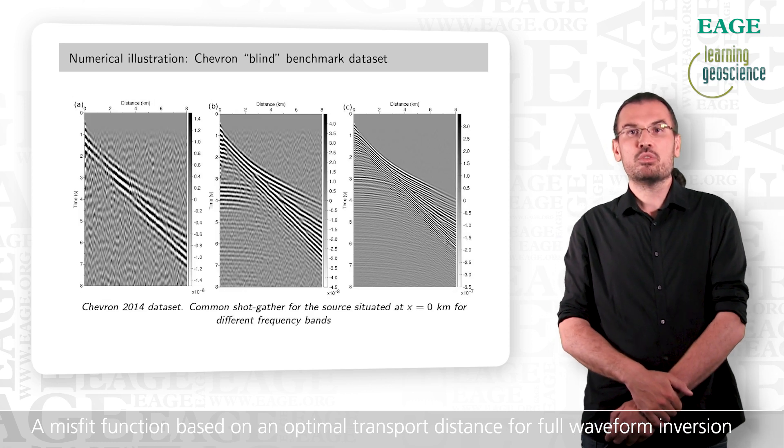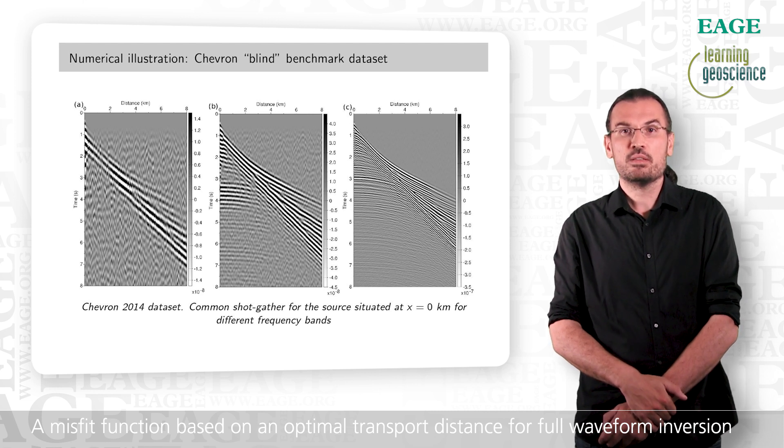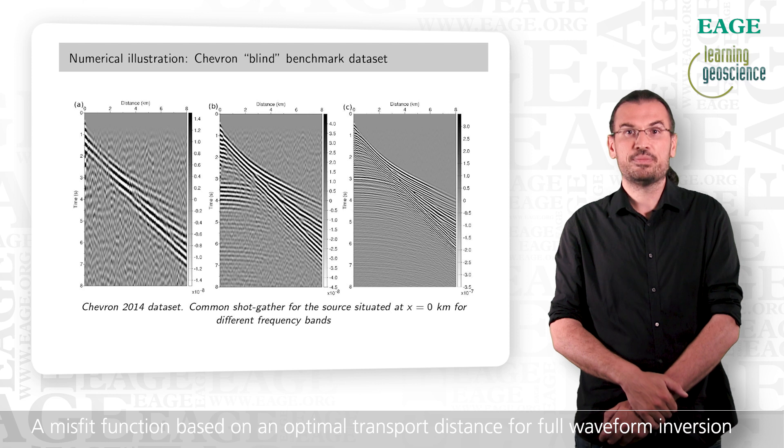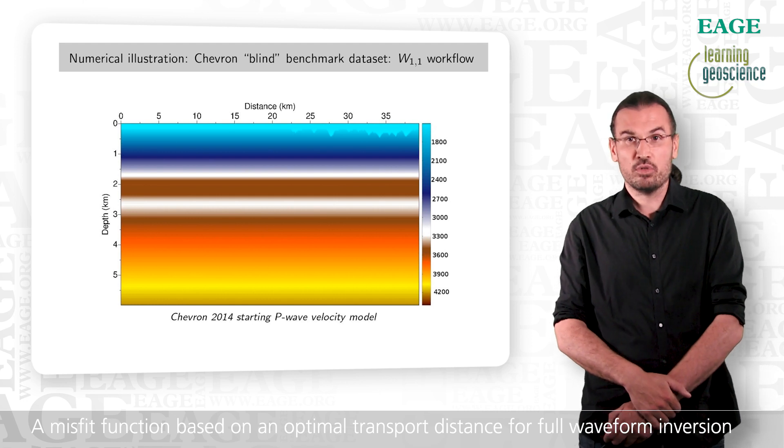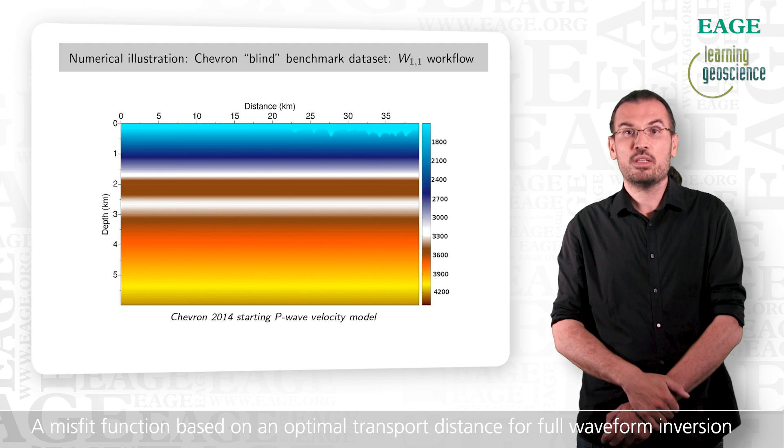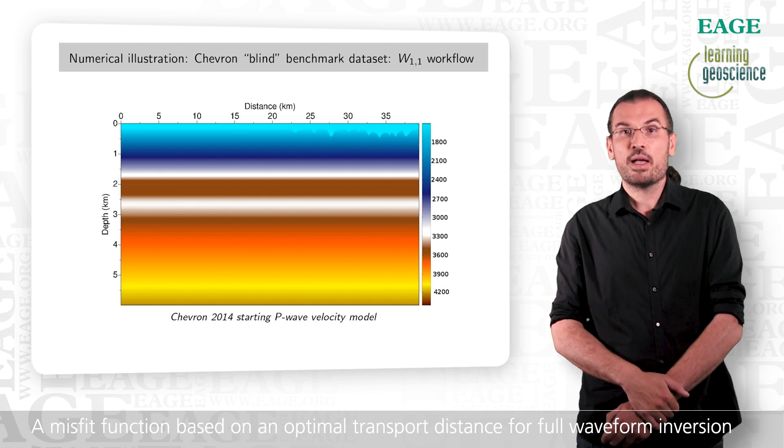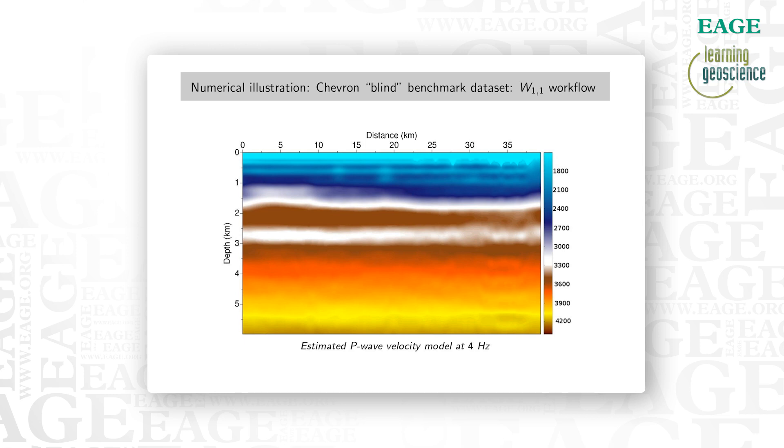Now we consider an application to the Chevron 2014 benchmark data set, for which we do not know the exact model. We present here three short scanners associated with increasing frequency bands. The signal over noise ratio is poorer at low frequency. The data is synthetic, but it is built using an elastic modeling engine. And we invert it in the acoustic approximation. The starting model is a 1D model, except for the bathymetry. It is provided by Chevron. The important feature is the velocity inversion layer near 3 km depth. The short offset of the acquisitions makes this case study challenging, as diving waves only sample the shallow part of the model. We implement a hierarchical frequency strategy from low to high frequencies, and we use our optimal transport approach.